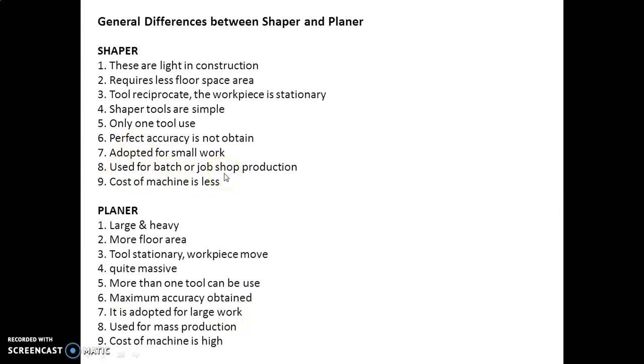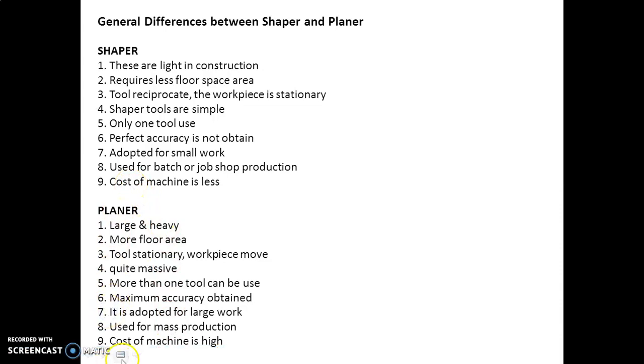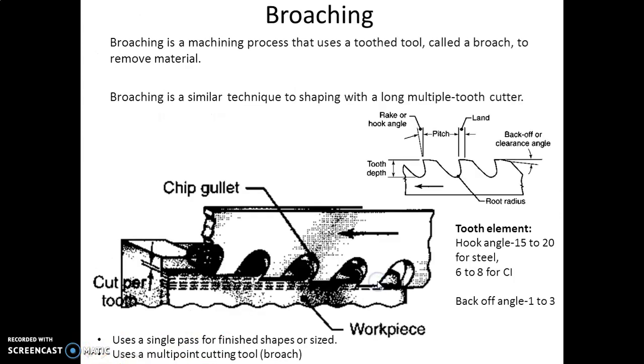In shaper it is used for batch or job production, and planer is used for mass production. Shaper - the cost of machine is less, but in case of planer the cost of machine is high. Now we will discuss next type of machining operation, that is broaching.